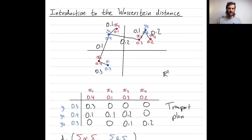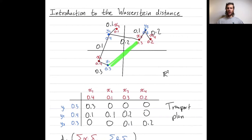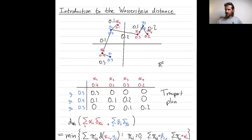A transport plan has to move all of the red mass to the blue mass. This is just one possible transport plan — you could write down others, perhaps moving some mass from x3 to y1. You look over all possible transport plans when you're trying to find the Wasserstein distance, and you choose the transport plan of the lowest possible cost.